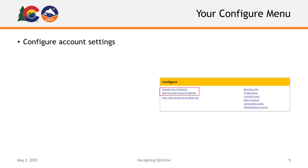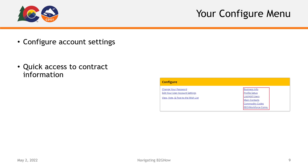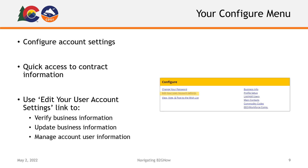The Configure section allows you to configure your account settings and provides quick access to project information. If you haven't already, we recommend you click the Edit Your User Account Settings link in this section to verify that all of the information for your organization and any users is accurate and up to date. Also, make sure to visit this link if any of your organization or user information changes so that you can be sure all communication reaches you.